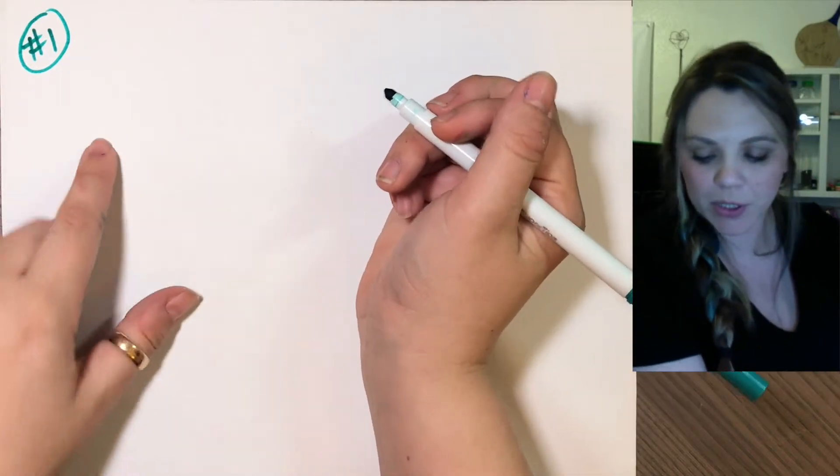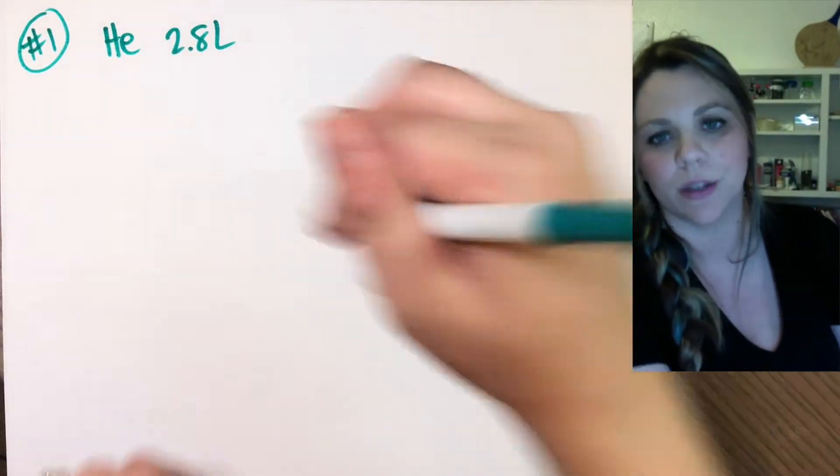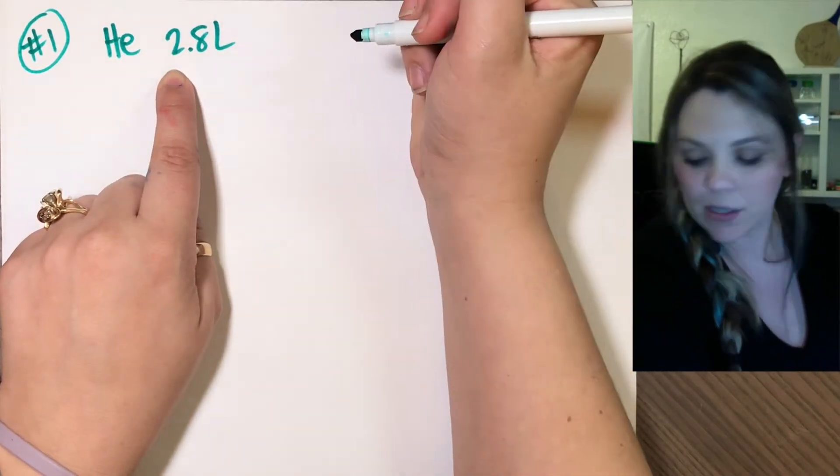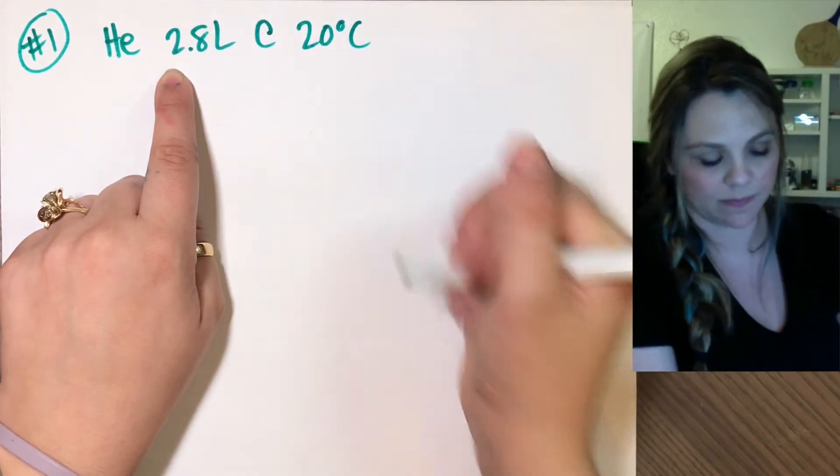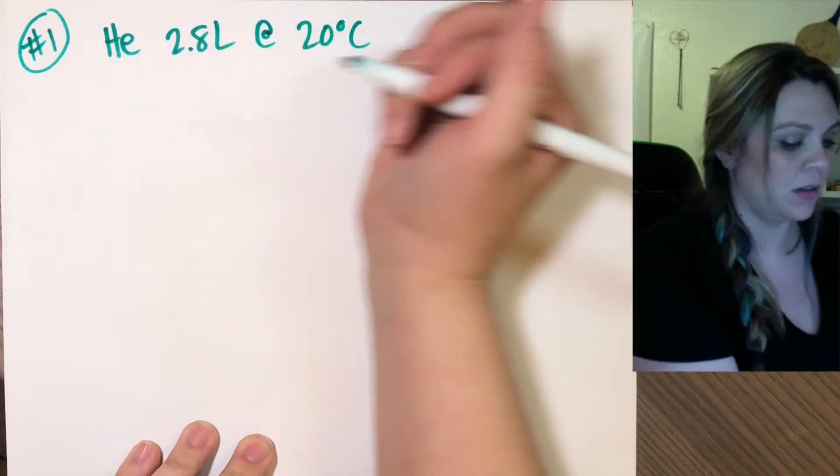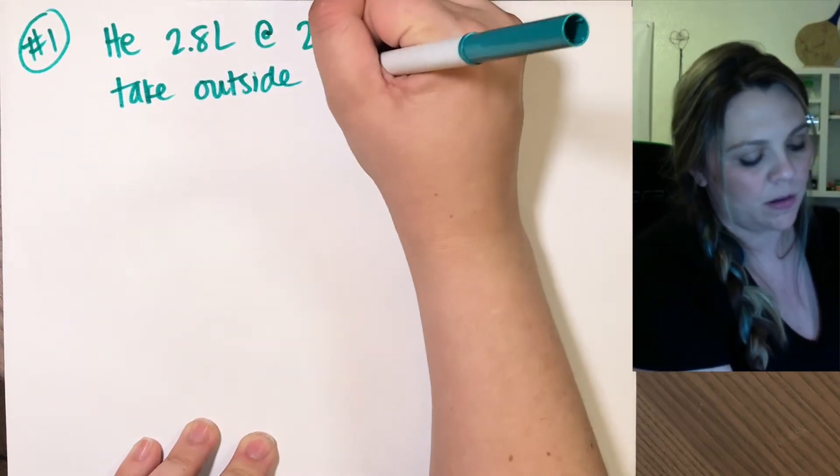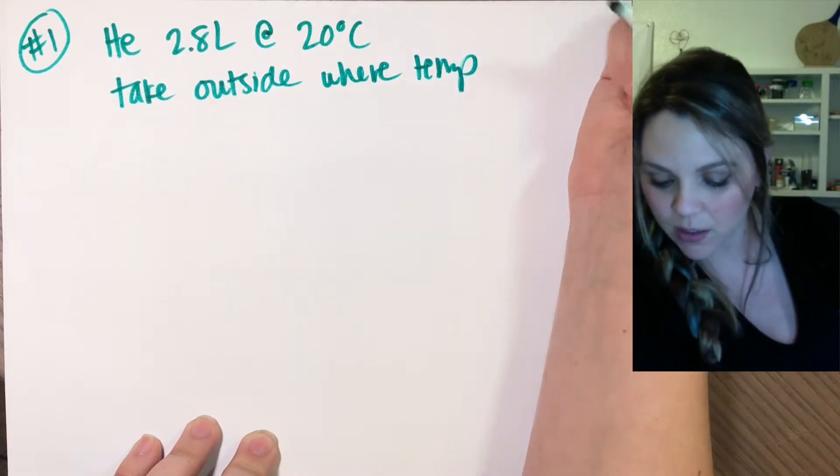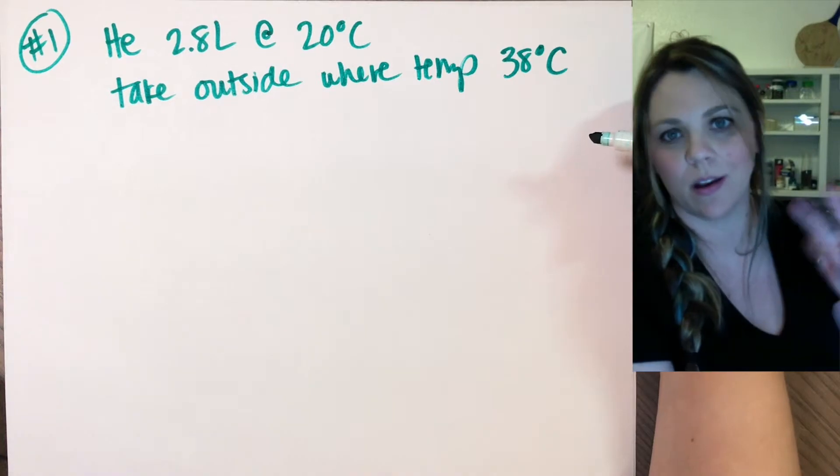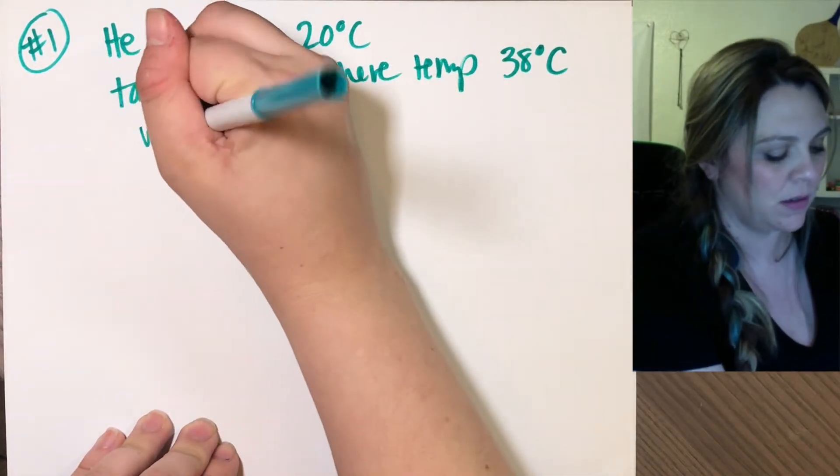Let's do one example. You have a balloon filled up with helium and it has 2.8 liters of helium, and it's in an air conditioned room at 20 degrees Celsius. I then take my helium balloon outside on a summer day, for whatever, a birthday party or something, take it outside where the temp is 38 degrees Celsius, which is about 100 degrees Fahrenheit. So we're imagining a nice hot summer day. What is the new volume of my helium balloon?